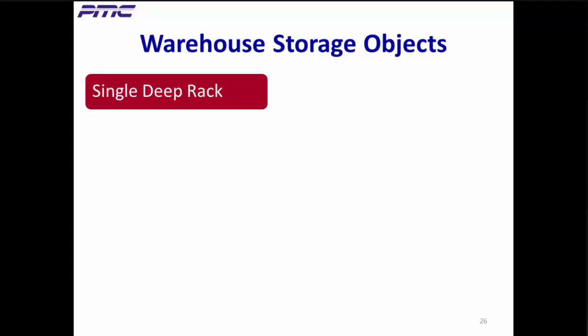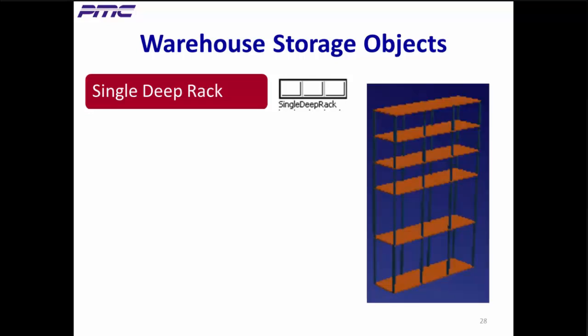The first high-level storage object is the deep single deep rack. In the 2D view, the single deep rack looks like this, and the 3D representation looks like this. All rack objects can be quickly customized for the number of clusters or shelves across — our example has three clusters — and the number of levels — our example has five levels — and the depth. You can specify individual lengths for each cluster and individual heights for each level. Our example has double the height for the first two levels, making it a very flexible object.